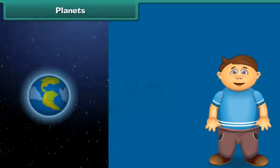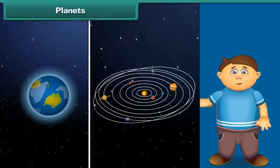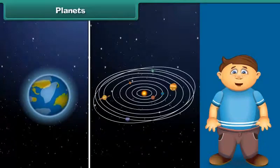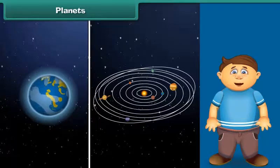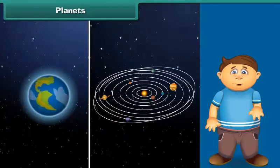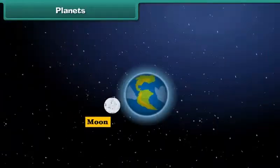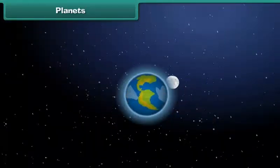Do you know that life is possible on planet Earth only because of the presence of water and oxygen? On other planets, there is no clue of the presence of oxygen and water. Apart from this, the extreme temperature is also not suitable for the existence of life on other planets.